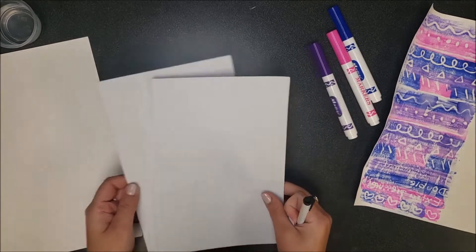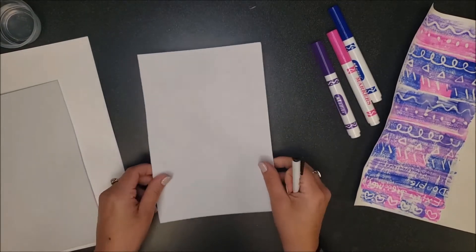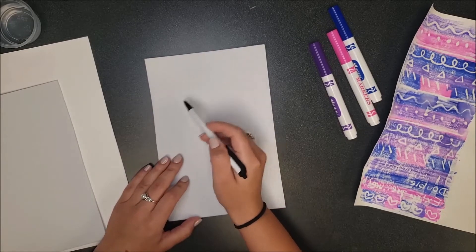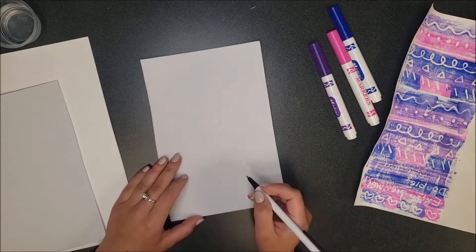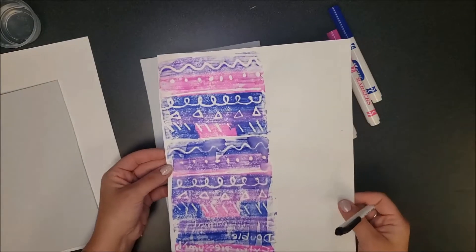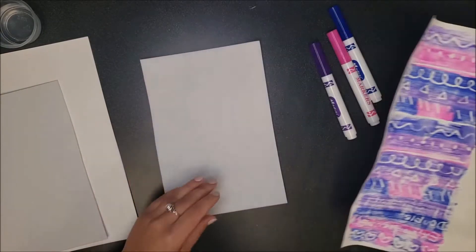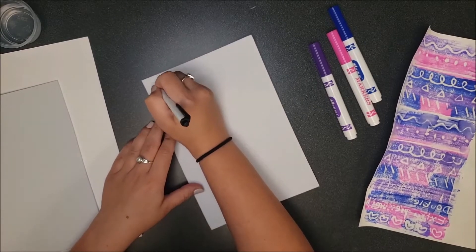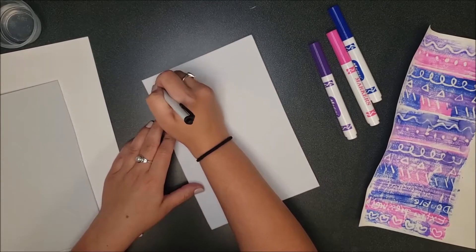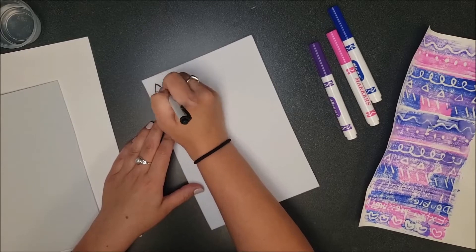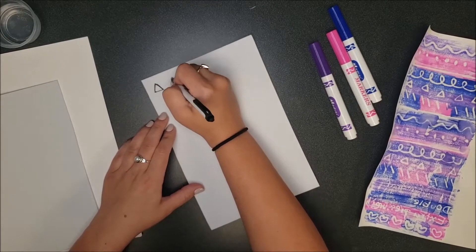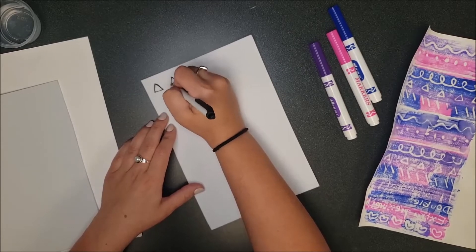First, to get started, take out one piece of foam and your pen. You are going to draw a design in the foam. You can do a pattern like I did, or you can draw anything you'd like. Make sure to press down hard. You can first press down lightly, and then go over it again a little bit harder.